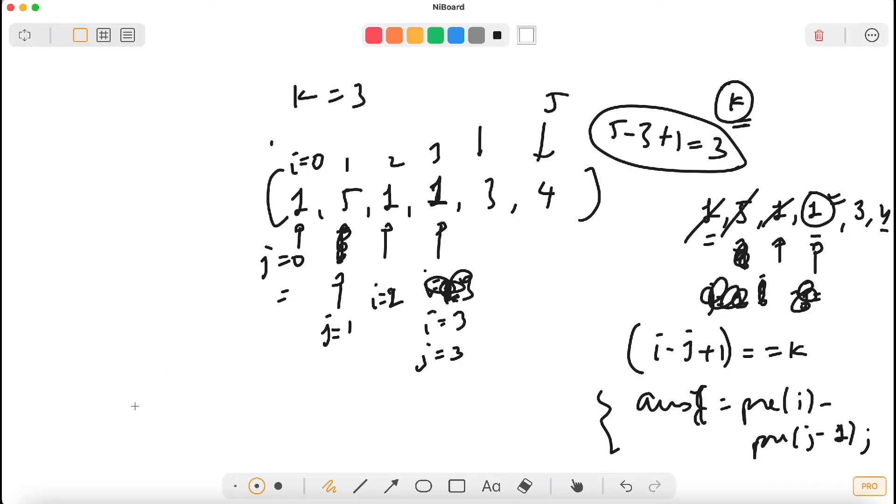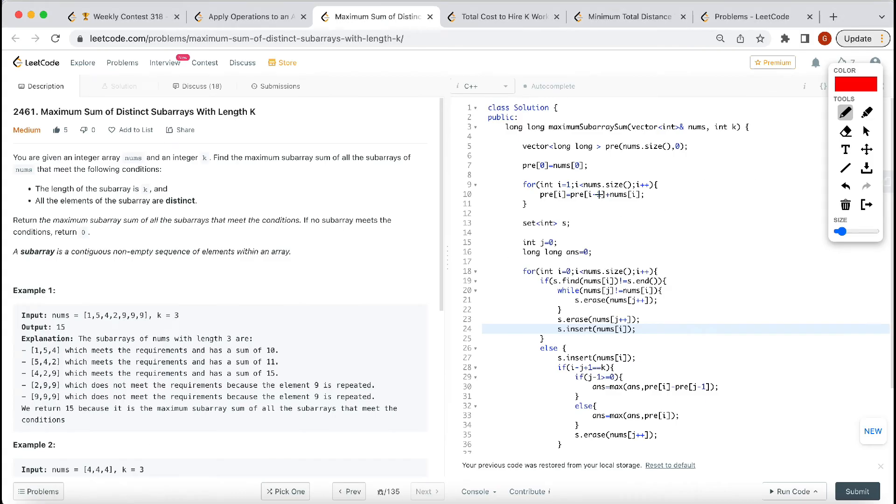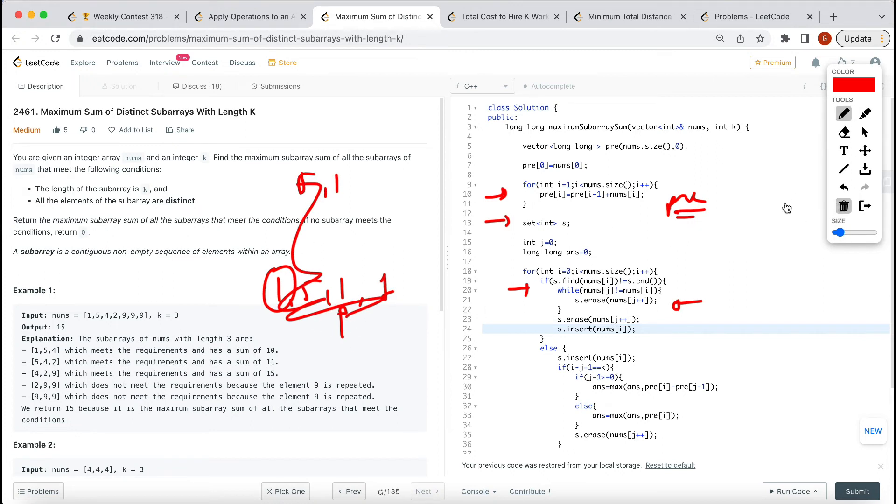So here is the answer. We have to check in code. We will get the answer. We will use the prefix here and check if the element is already in our set, like one, five, one.